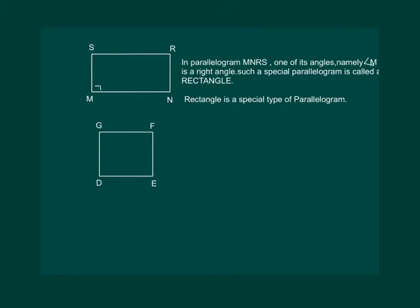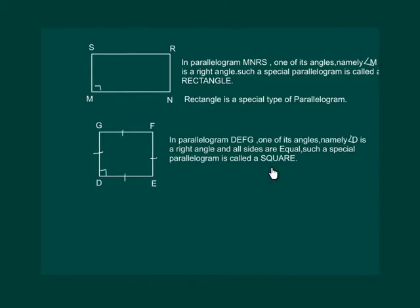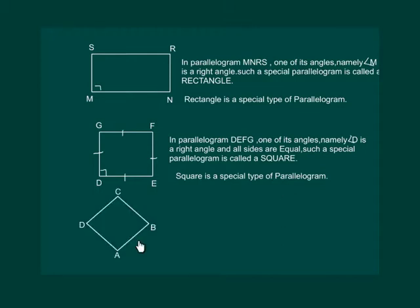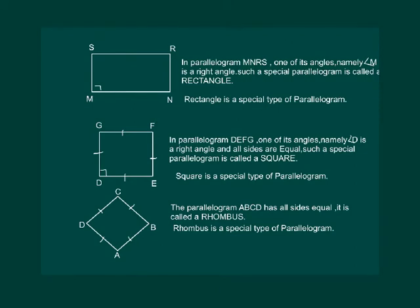Now consider parallelogram DEFG. It has angle D equal to 90 degrees and all sides are equal — such a special type of parallelogram is called a square. That means a square is also a special type of parallelogram. Consider parallelogram ABCD in which all sides are equal but there is no condition imposed on the angles. Such a parallelogram is called a rhombus, which implies that a rhombus is also a special type of parallelogram.